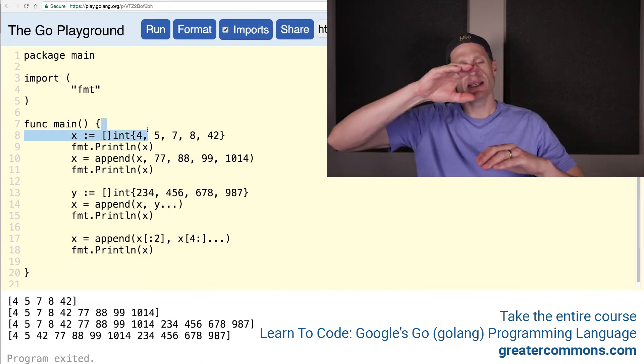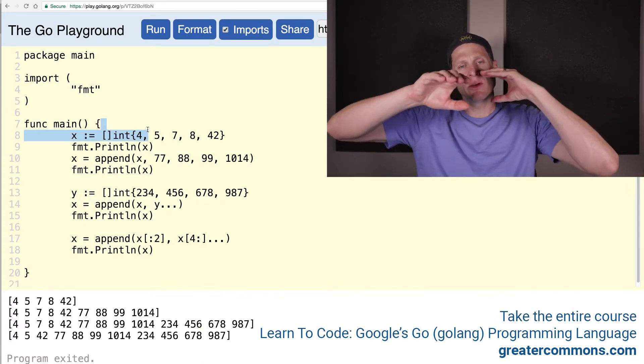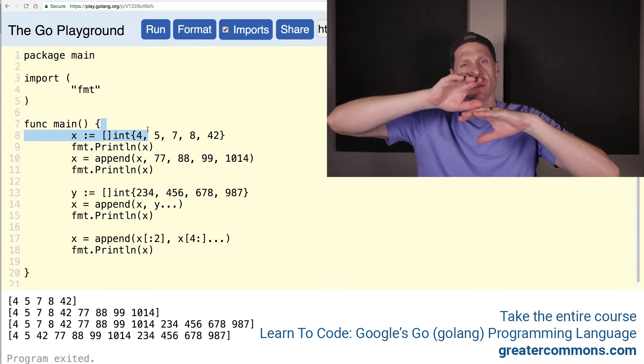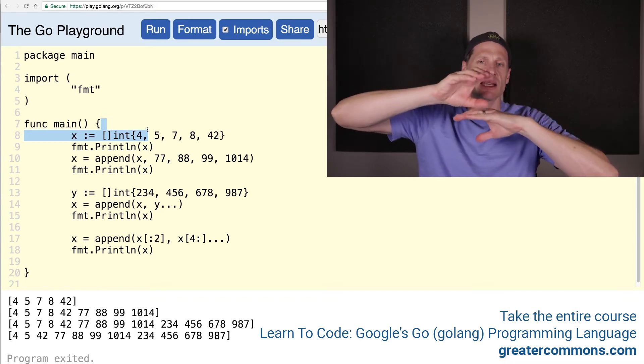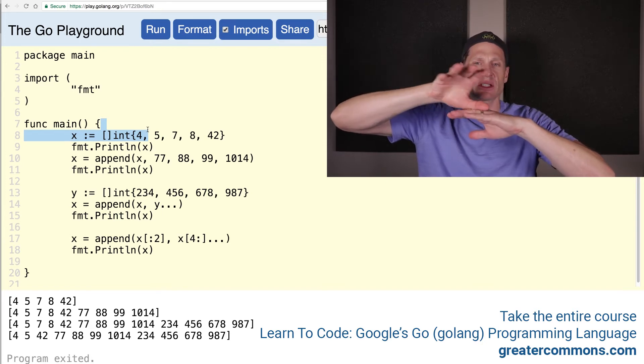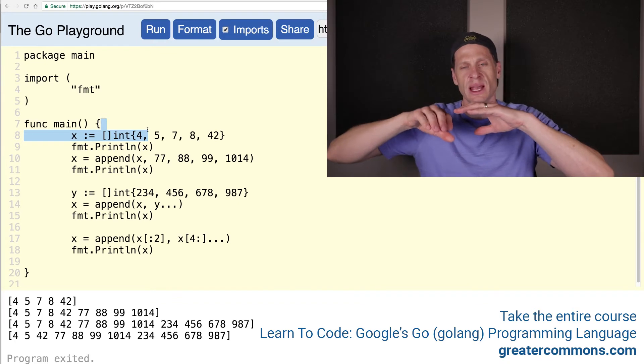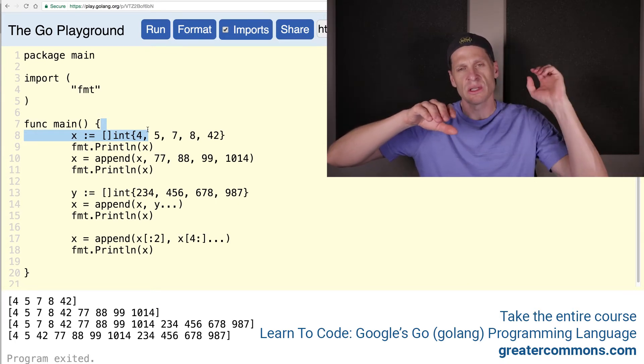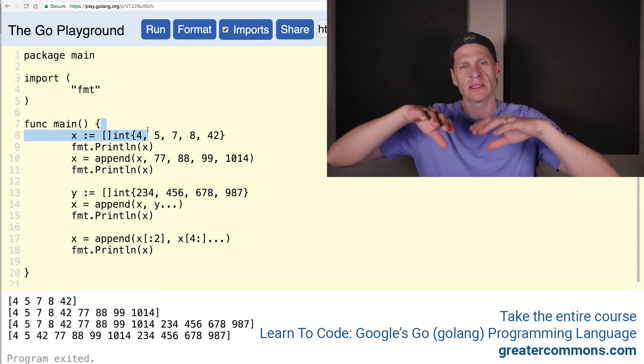All right. So a slice is built on top of an array. And slices are dynamic in that they can change in size. Their size is dynamic. And so when you create a slice, it's sitting on top of an array. And then if your slice grows, this array down here, a new array has to be created. And then all the values copied into the new array. And then this old one's thrown away. And that takes some processing power.